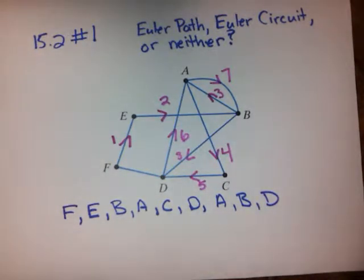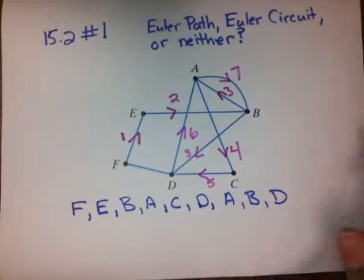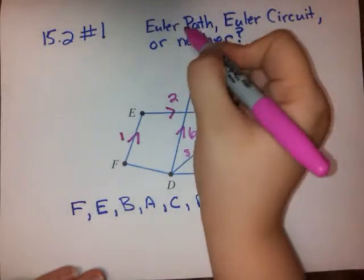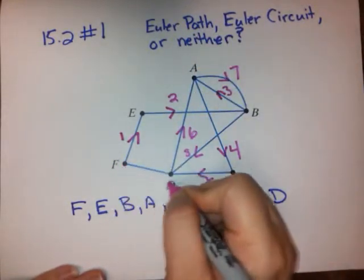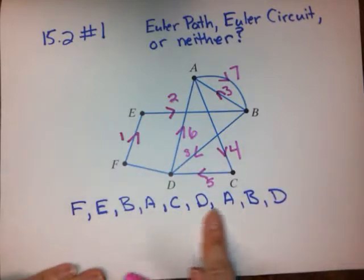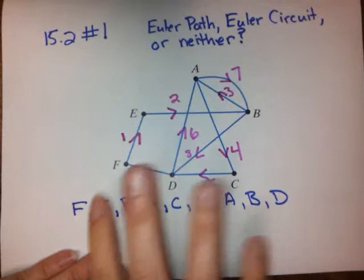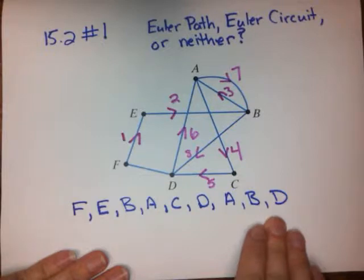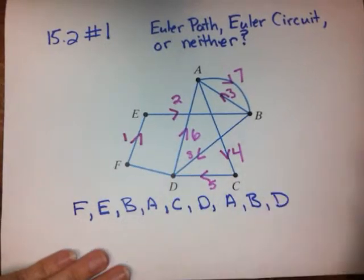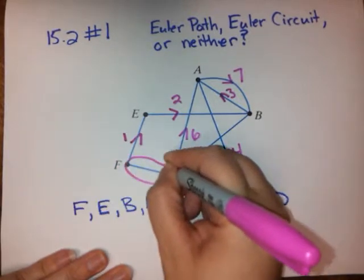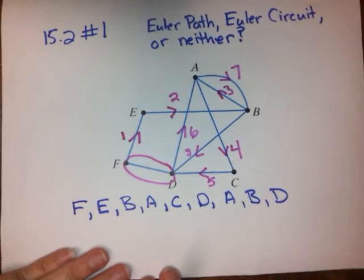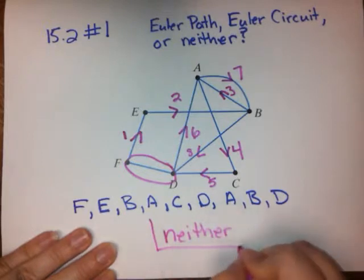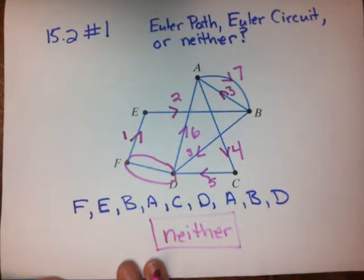I've labeled everything they asked me to label, but what are we missing? We're missing one edge — we never covered this edge between D and F. For it to be an Euler path, we would have to include that edge, and it doesn't appear anywhere in the list. So we knew it wasn't a circuit because it didn't stop and start in the same place, and now we see this edge isn't included. So the answer is neither — this is not an Euler path, and it's not an Euler circuit.